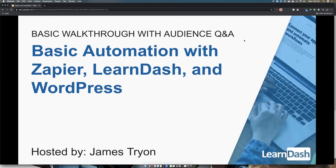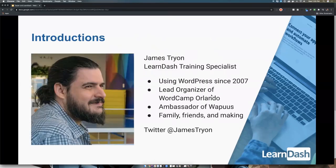I'm James Tryon. I've been using WordPress since 2007. I'm the lead organizer of WordCamp Orlando this year, and Ambassador of Wapus — that's the unofficial mascot of WordPress. I've got a fantastic family; you might hear them throughout the presentation.